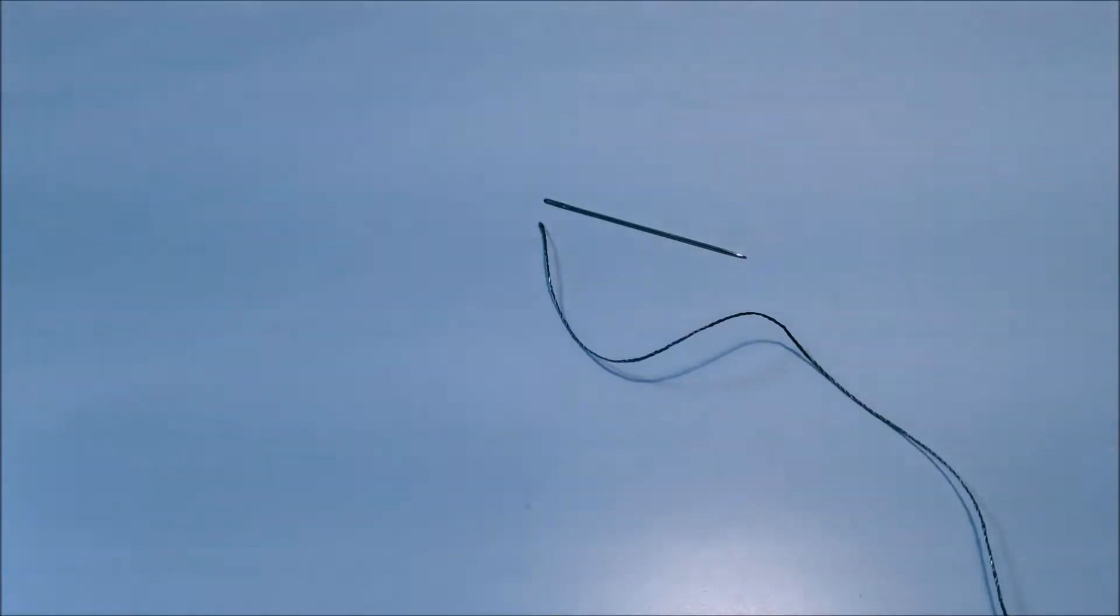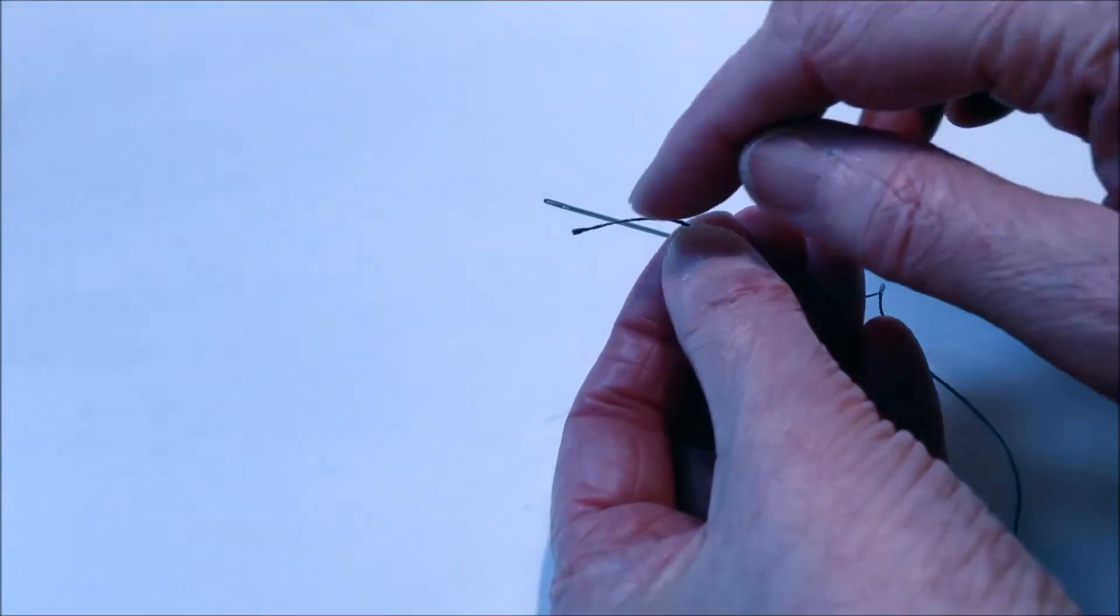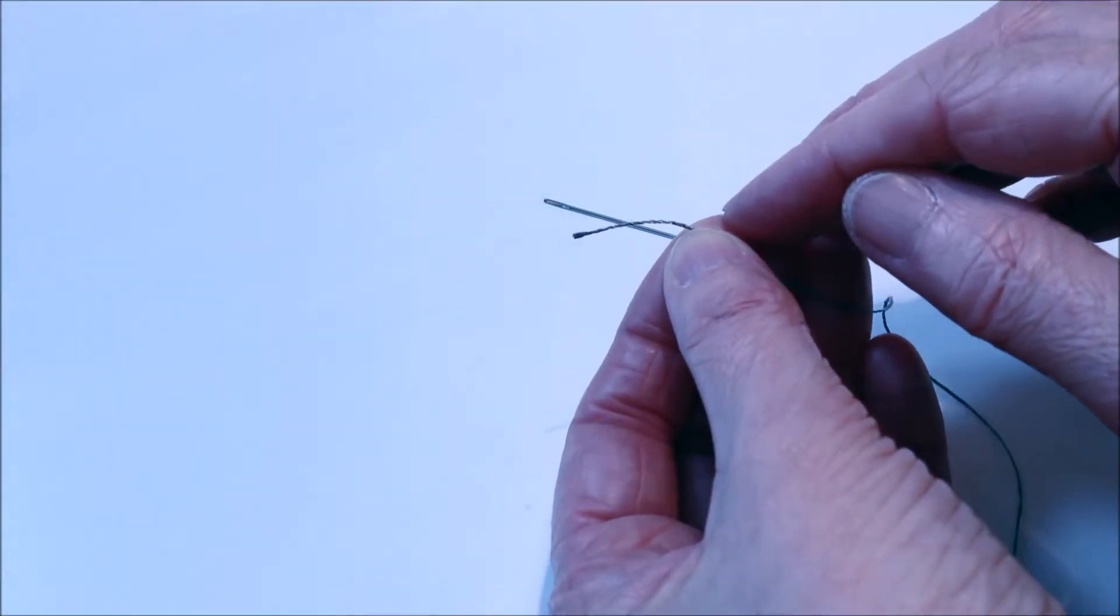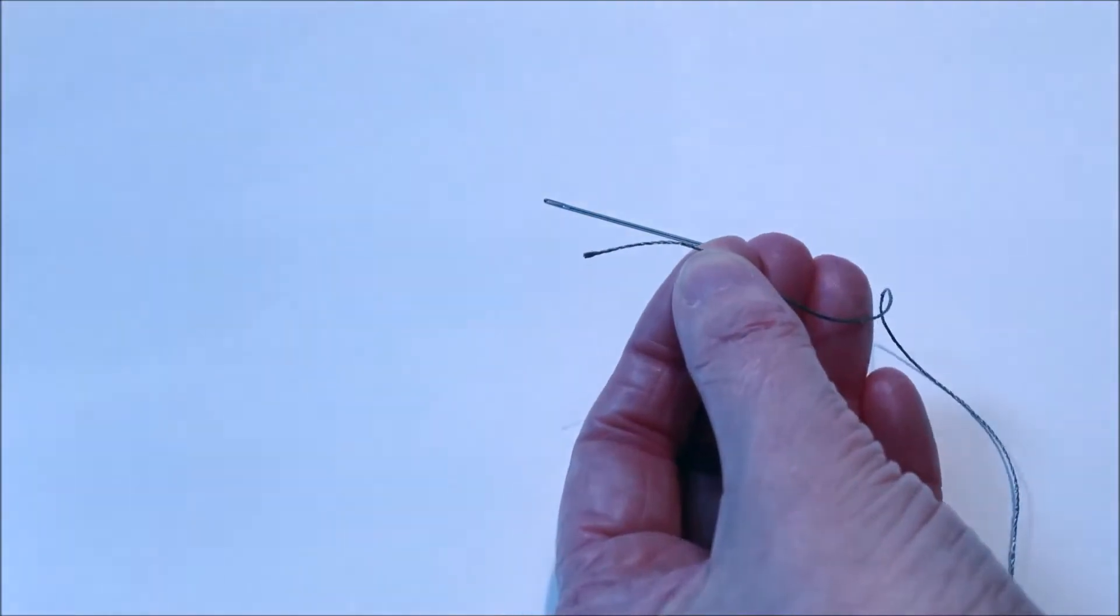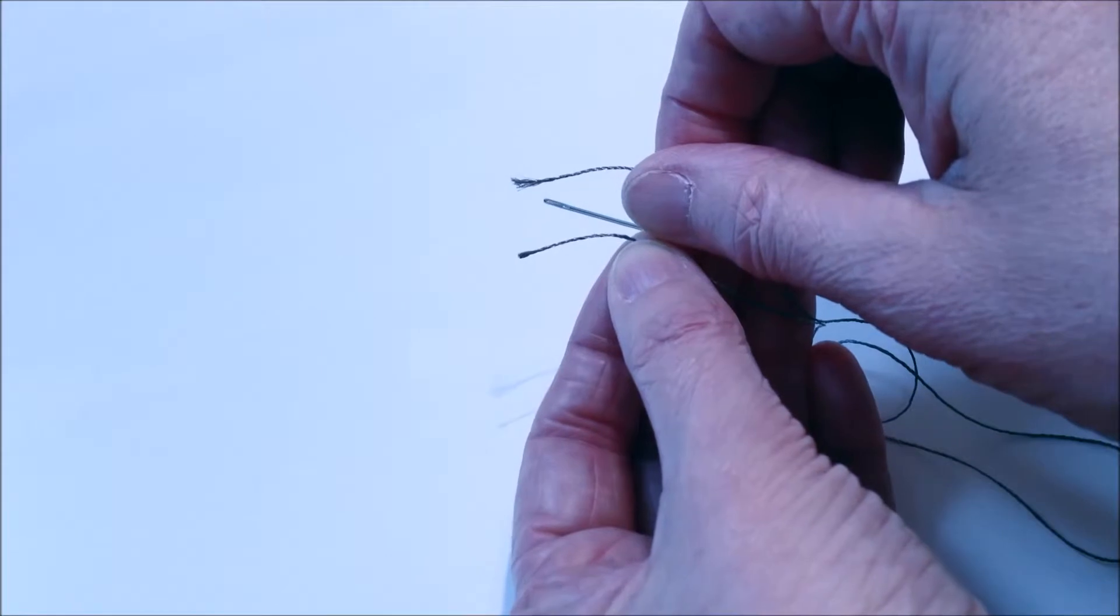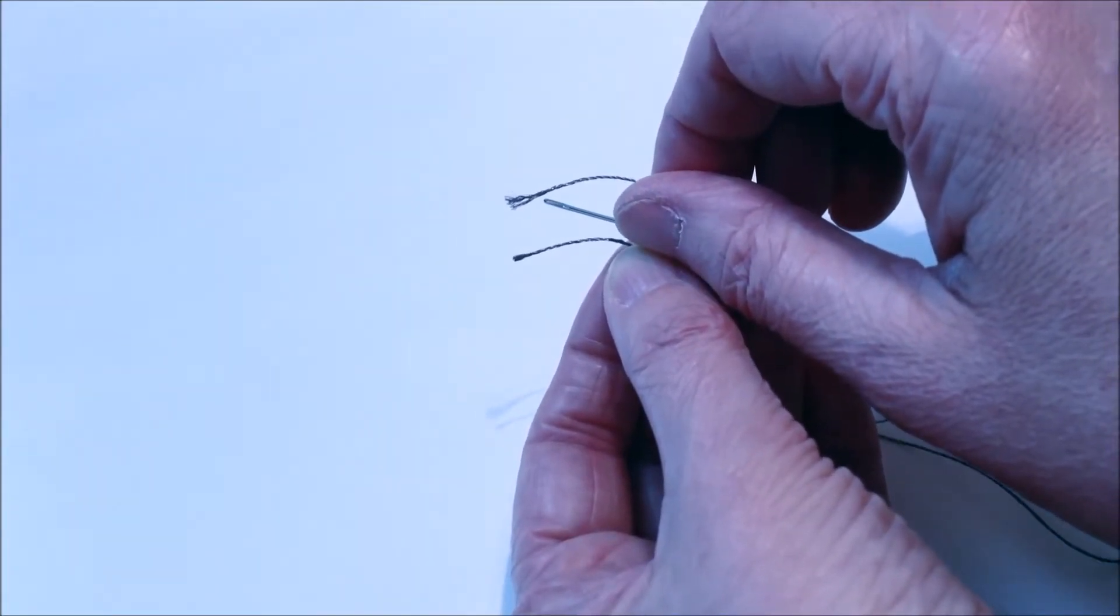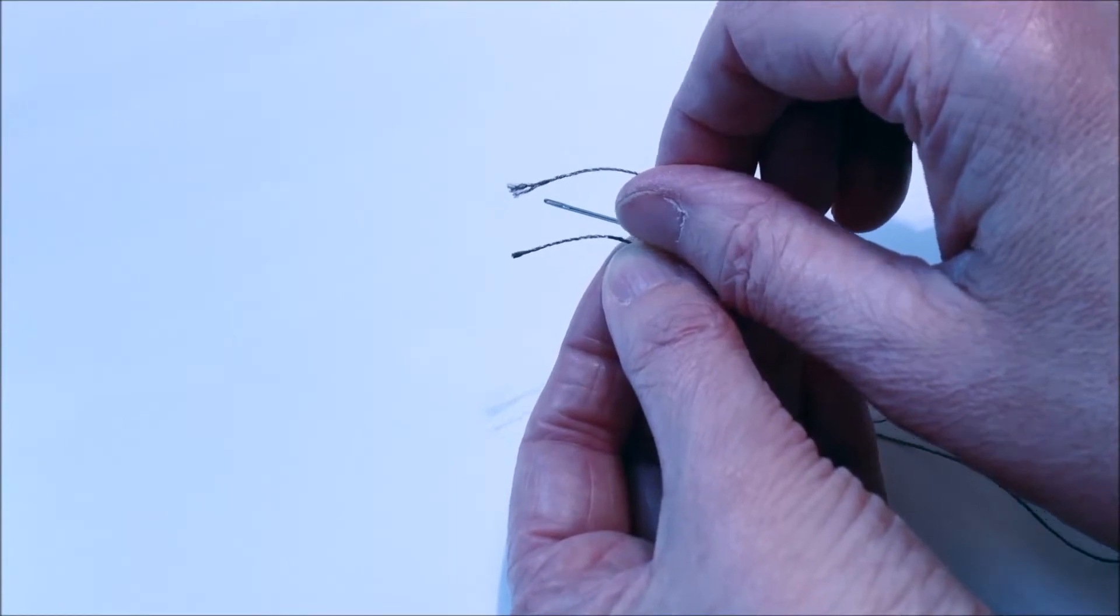To thread your needle without a needle threader, a good tip is to make sure the end of this thread has just been cut. If I just show you the other end of the thread, so the bottom end of the thread, you can see how it's fraying a lot. And that fraying makes the needle much more difficult to thread.